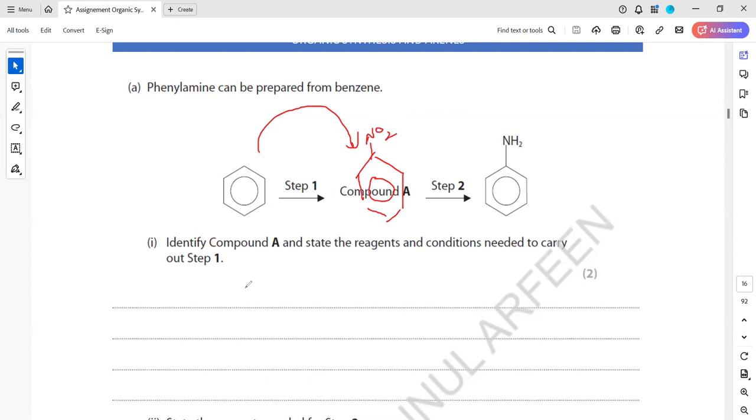So how is nitrobenzene formed? We use nitration by using 50% concentrated nitric acid and sulfuric acid. So mixture of concentrated nitric acid, 50%, and the temperature is about 50 to 60 degrees, or 55 degrees, the exact one. Compound A is nitrobenzene.